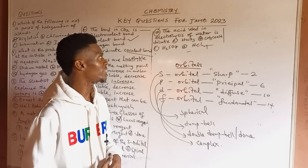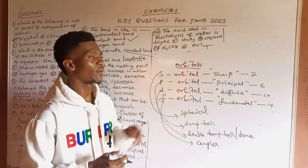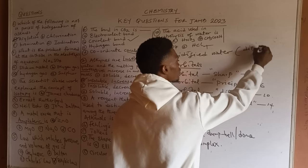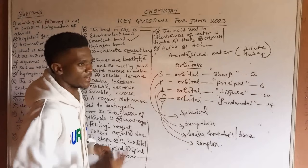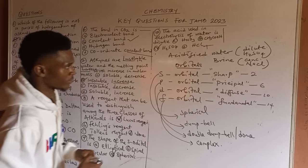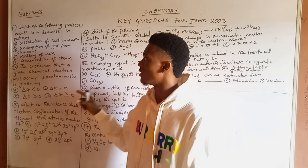Question 10: The acid used in electrolysis of water is dilute — the answer is C. When you study electrolysis, you learn that electrolysis of acidified water means electrolysis of dilute H2SO4 (tetraoxosulfate-VI acid). Also, electrolysis of brine is the electrolysis of concentrated sodium chloride. We've now covered the first ten questions; let's rub off the board and look at questions 11 to 20.